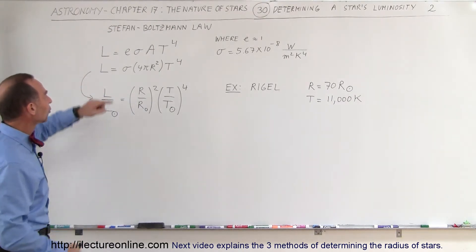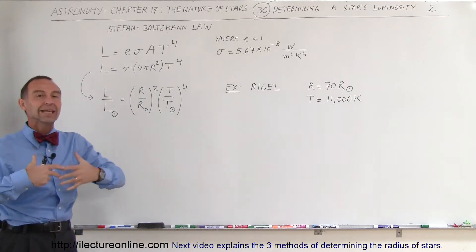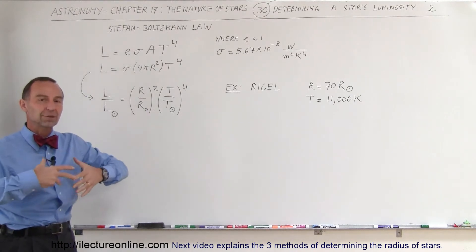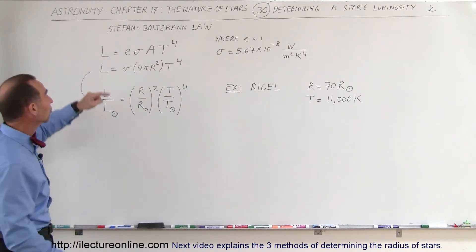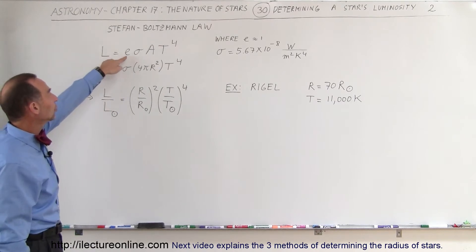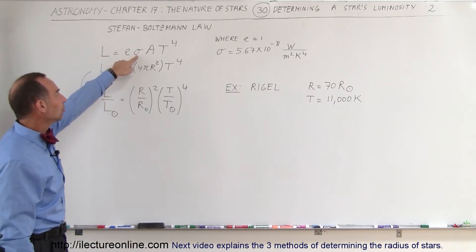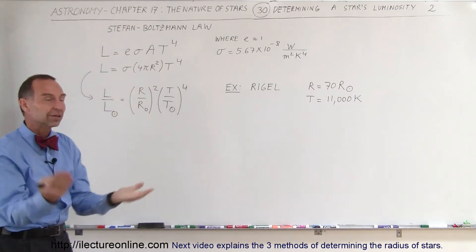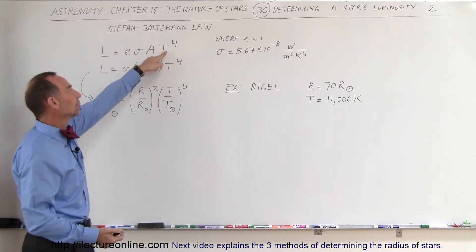The Stefan-Boltzmann law determines the power output, the energy output of any object based upon radiation. Stars radiate energy, and the equation is equal to the emissivity times Boltzmann's constant times the surface area of the object times the temperature of the object to the fourth power.